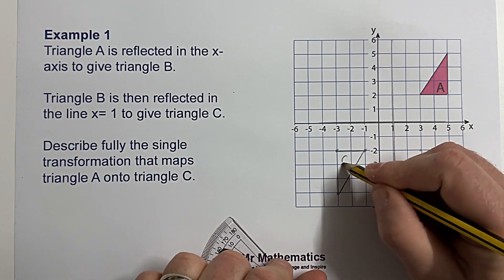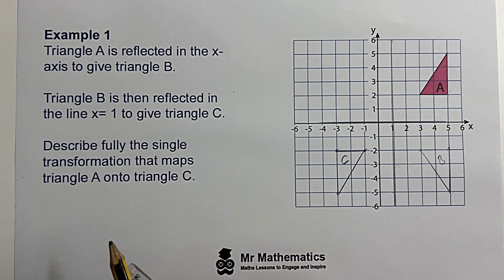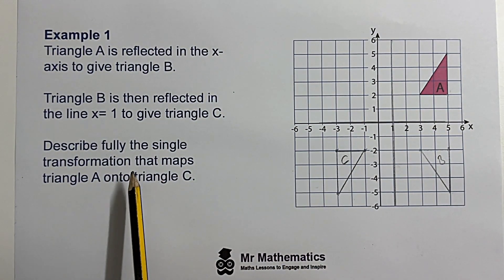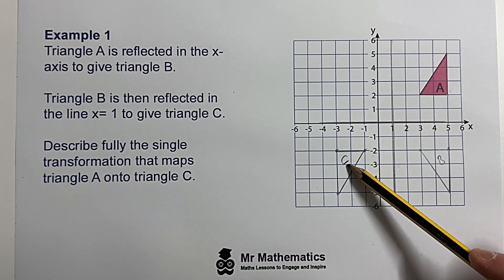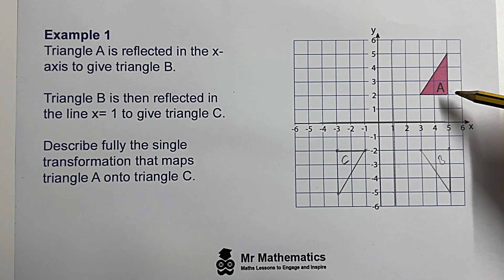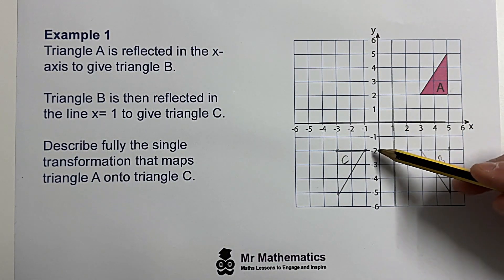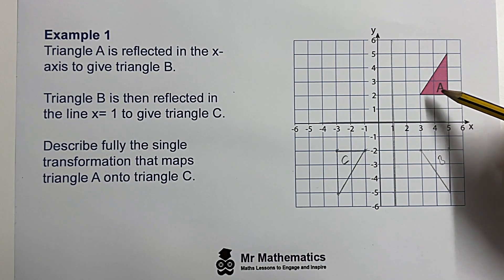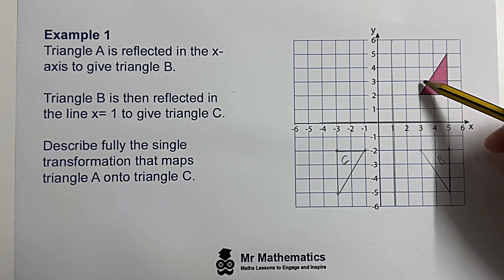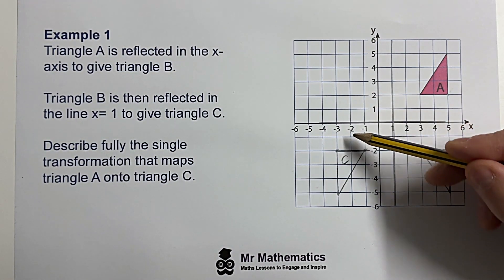We'll label this C. Now we're asked to describe the single transformation that maps triangle A onto triangle C. We need to ask ourselves: is it a rotation, a translation which moves the shape but keeps the same orientation, or is it a reflection? We know it's not an enlargement. You can see this is being turned by 180 degrees.